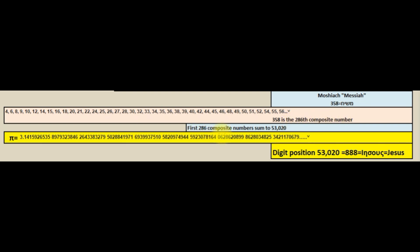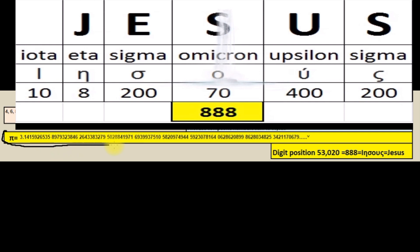The first 286 composite numbers sum to 53020. At digit 53020 in pi, we find the number 888, which equals Jesus in Greek.